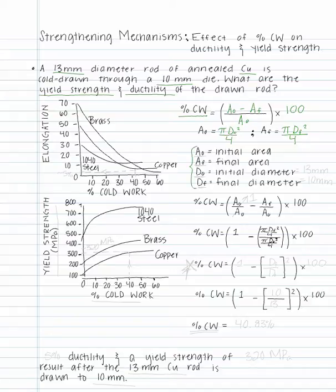Now we can identify all of the variables in our equations. A₀ is the initial area. A_f is the final area. D₀ is the initial diameter or 13 mm, and D_f is the final diameter or 10 mm.